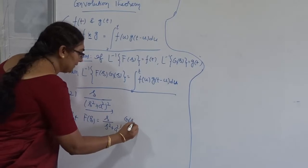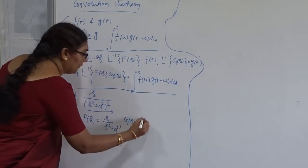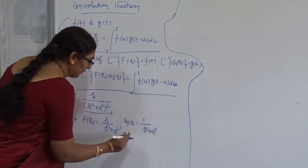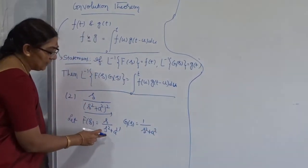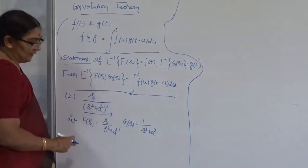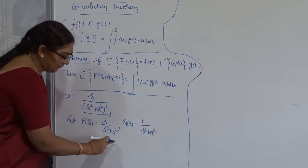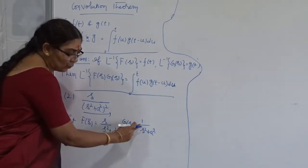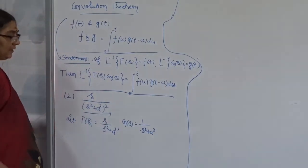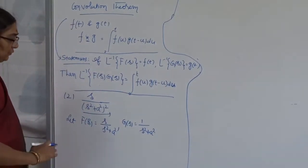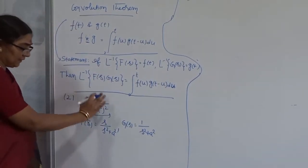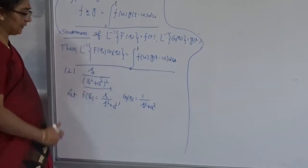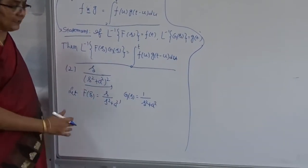And I am going to consider G(S) = 1/(S² + a²). Once you choose the product of two functions, using the standard result, the inverse Laplace of F(S) is cos(at), and the inverse Laplace of G(S) is (1/a)sin(at). Suppose you choose the given function as a product of two functions, immediately we get the corresponding inverse value.